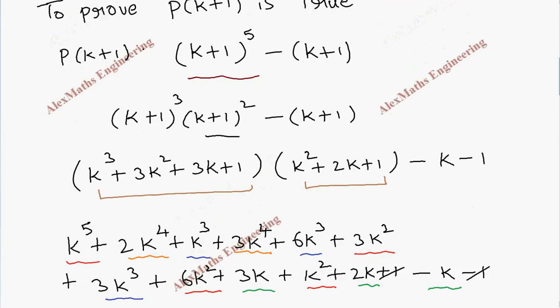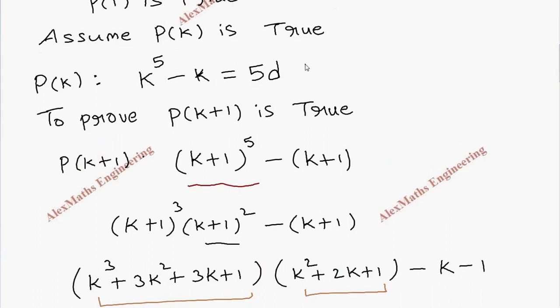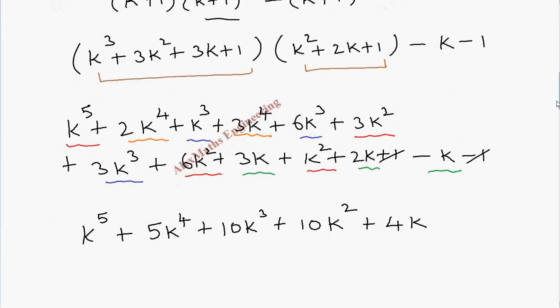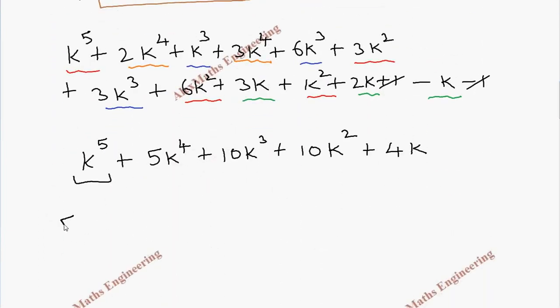Now from this expression, already we have named k^5 as 5d plus k. We are going to substitute 5d plus k in place of k^5. So 5d plus k, then rest of the terms as it is.